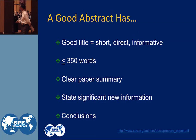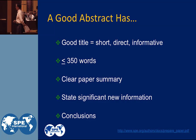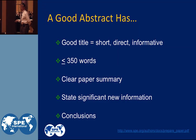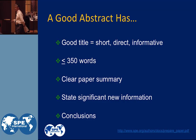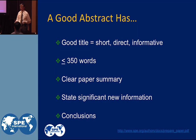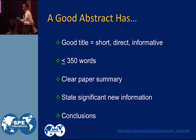A good abstract has a good title. It's short, direct, and informative — like Mr. Bob LaLoglie's paper. It's very short but very informative, like three or four words. As I mentioned, 350 words or less. Clear paper summary in the abstract. And you need to state any new information that's significant. That's your advertisement piece to get your paper into the conference.